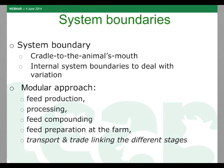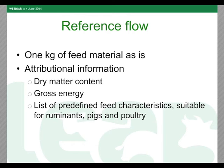The four stages are: feed production — which can be plant production or animal production — processing, feed compounding, and feed preparation at the farm. Between those four modules, there is always, in one form or another, transport and trade. It is the link between the different stages and can be a complex or a very simple link.